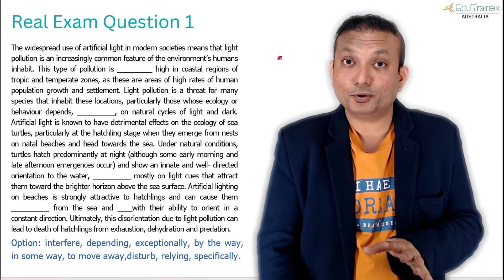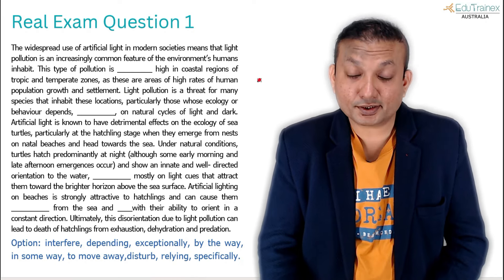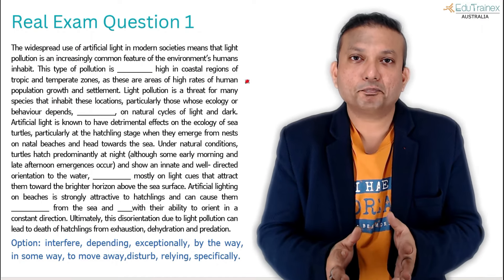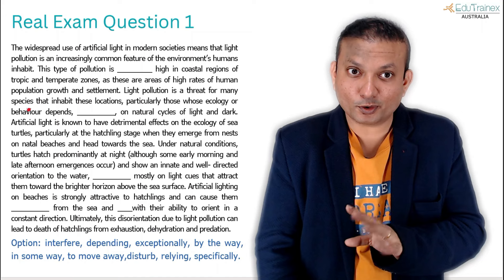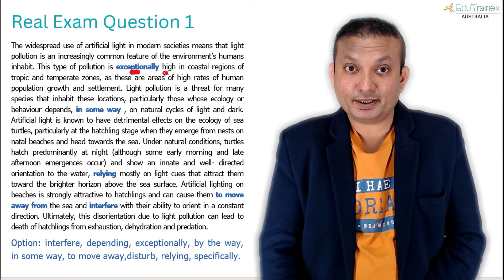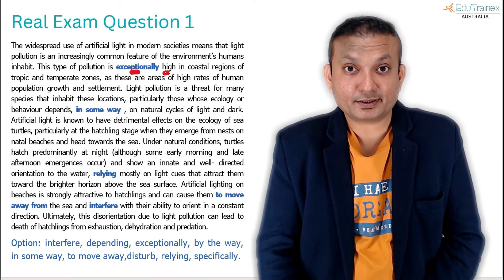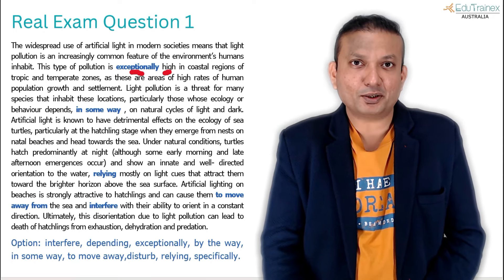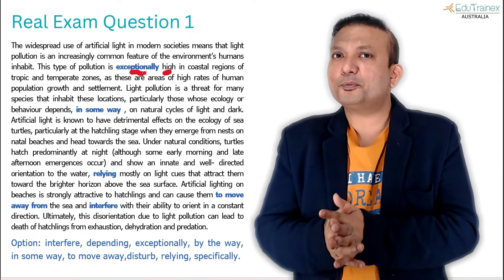You can pause the video and try to solve the question on your own. The first answer: 'exceptionally high.' 'High' over here — high, higher, highest — these are adjective words. An adverb is coming before an adjective — we talked about this. That's the pattern applied here: 'exceptionally high.' In terms of collocations, we also use 'significantly higher,' 'exceptionally higher' — that's the kind of language used, and that's where collocations come from.